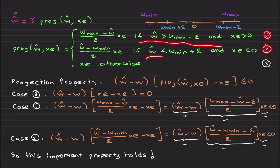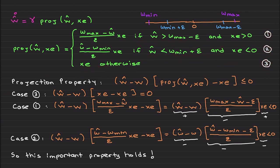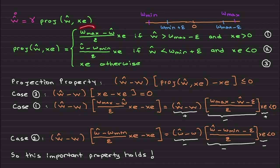I will call three cases: Case 1 if this condition holds, Case 2 if this other condition holds, and Case 3 — otherwise. The easiest is Case 3: if you insert the 'otherwise' part, this term cancels with this term and you obtain zero. So Case 3 gives zero and we are done. Now let's look at Case 1.